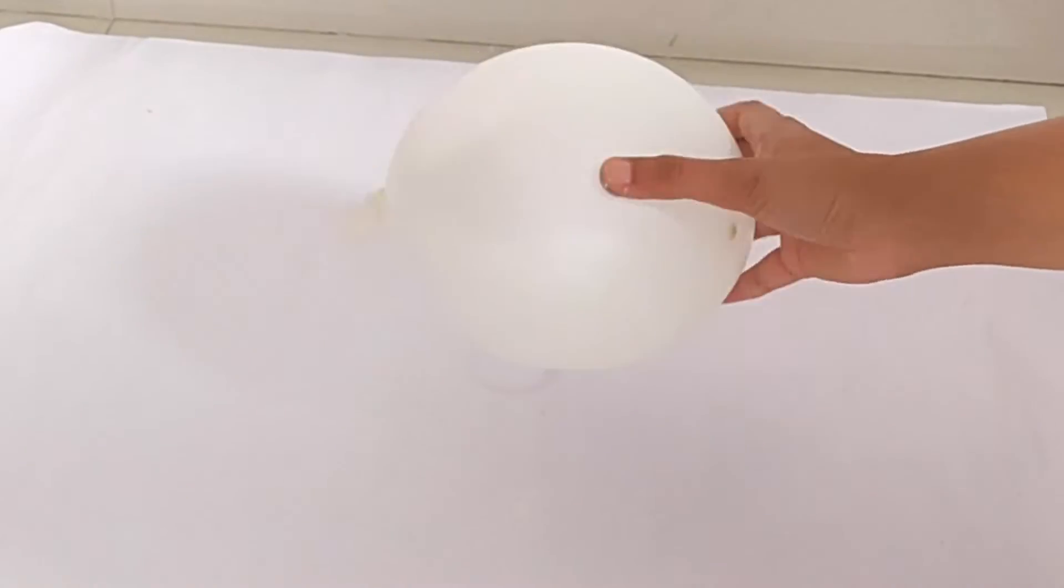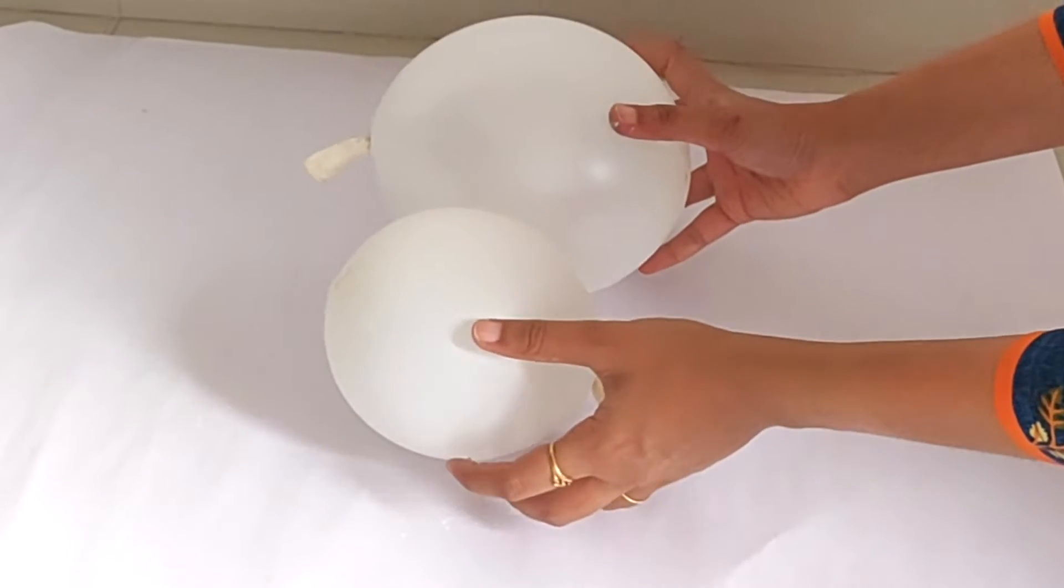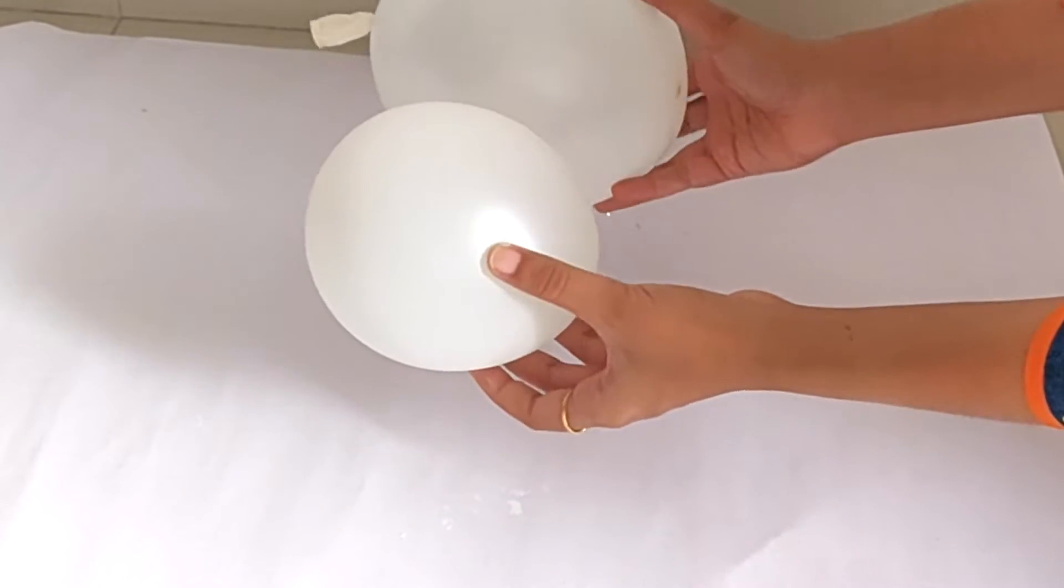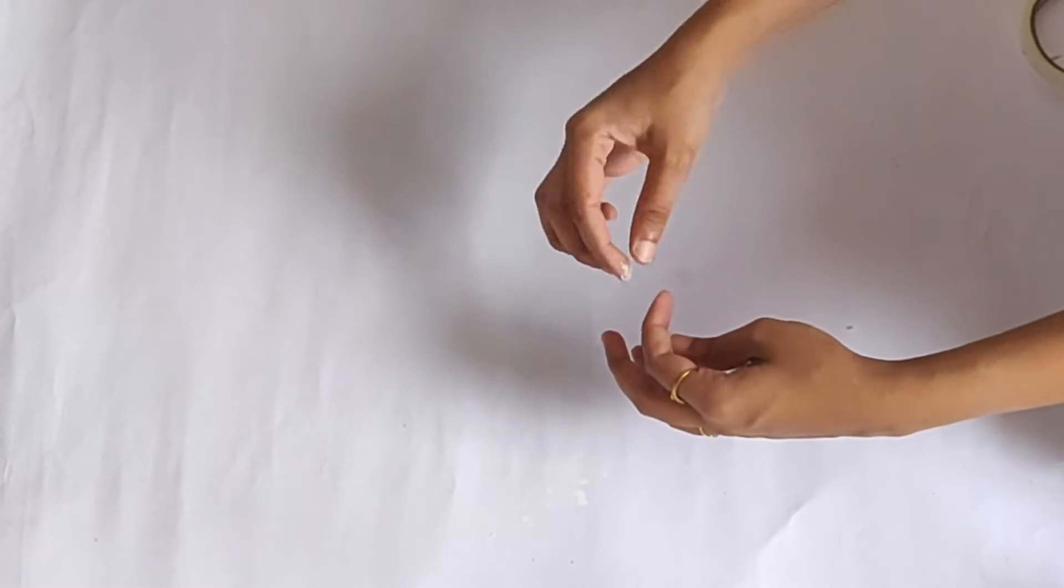Now let's make a snowman from balloons. For that, I took two white balloons, one small and one large, and then stuck them together with tape.